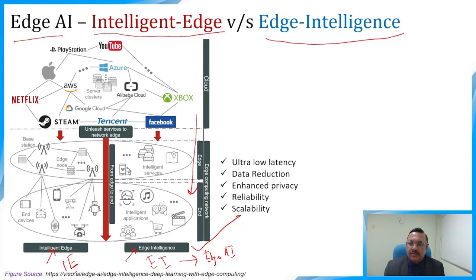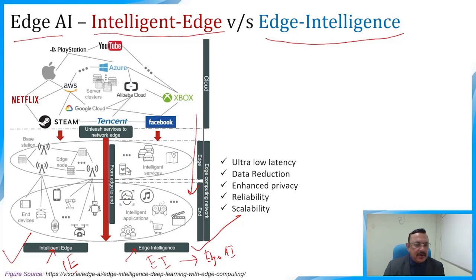Intelligent edge, on the other side, aims to incorporate AI into the edge for dynamic, adaptive edge maintenance and management. Intelligent edge focuses on providing better solutions to constraint optimization problems in edge computing with the help of effective AI technologies. Hence, AI is used to endow the edge with more intelligence and optimality — it can be understood as AI for the edge, or intelligence-enabled edge computing.